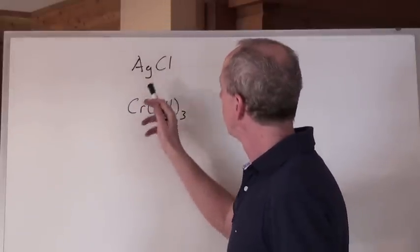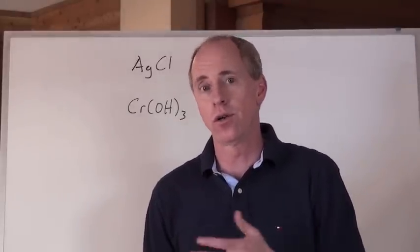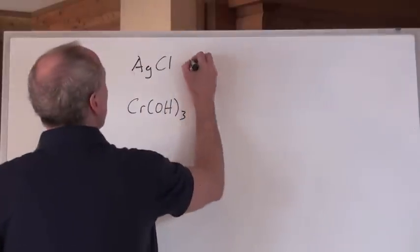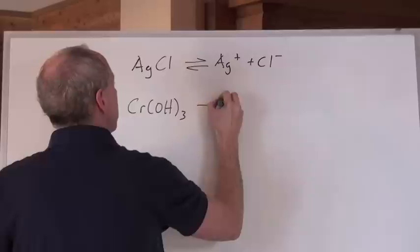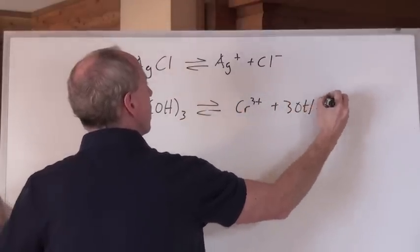Now, if somebody says, which one of these two will dissolve better in an acid or a base, or not? How do you answer that? Well, first of all, you know that these guys will break down into these ions right here. So you've got the chromium-3 ion, and it breaks down into three hydroxide ions.